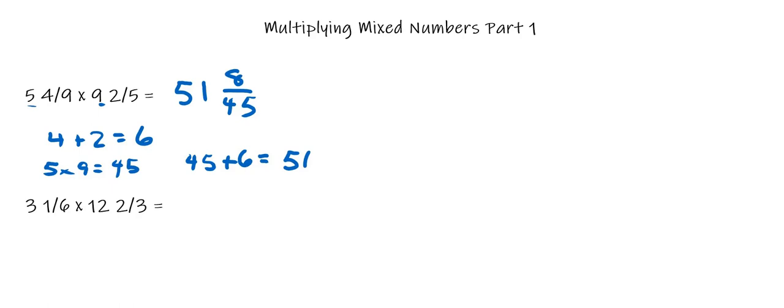Alright, so let's look at the next problem. So 3 and 1/6 multiplied by 12 and 2/3. So the first thing we got to do is multiply the fractional parts of our mixed numbers. So we have 1/6 multiplied by 2/3. That gives you 2/18 which will simplify to 1/9. So we'll write that.